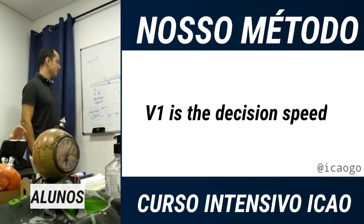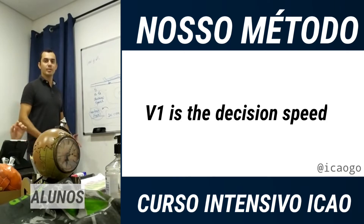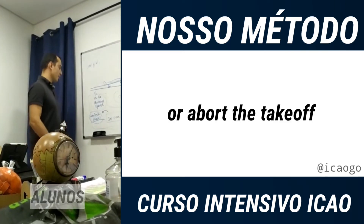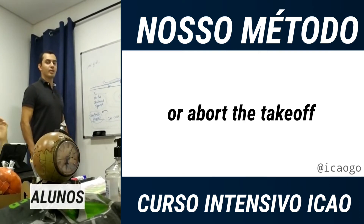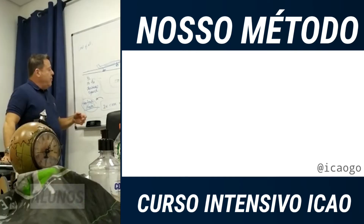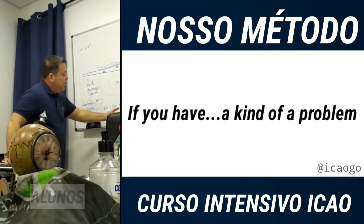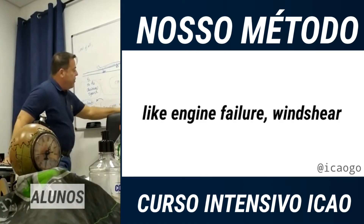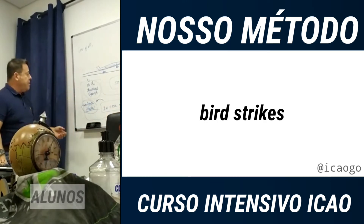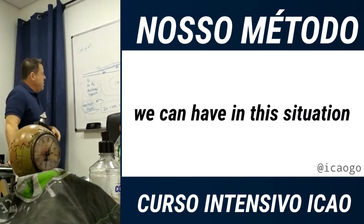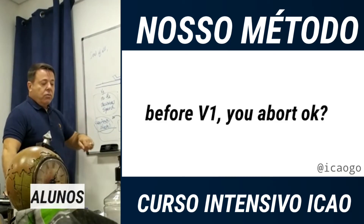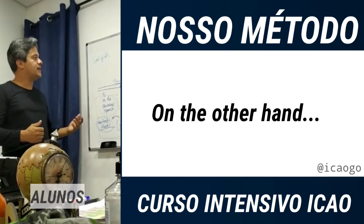V1 is the decision speed — when you decide to continue or abort the takeoff in case of some unexpected situations. If you have a problem like engine failure, wind shear, hydraulic failures, or even bird strikes, and this problem occurs before V1, you abort.